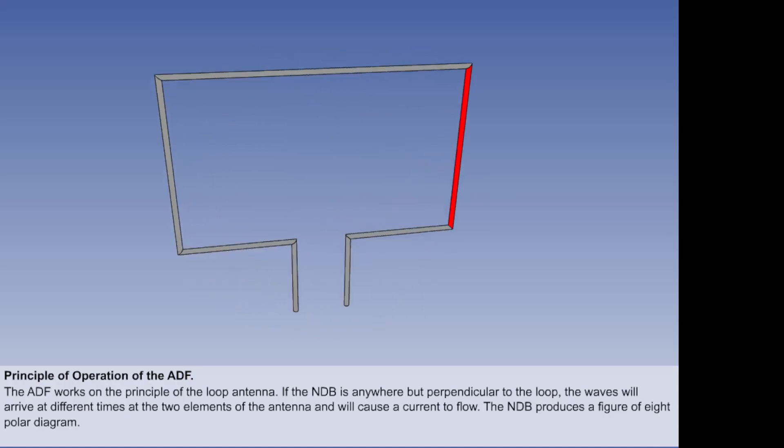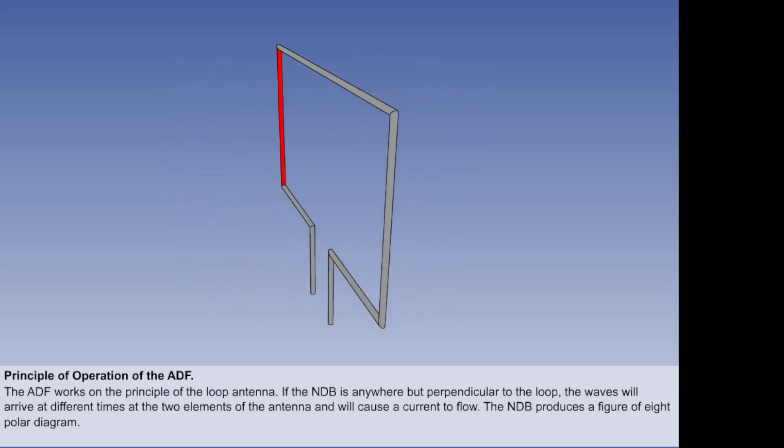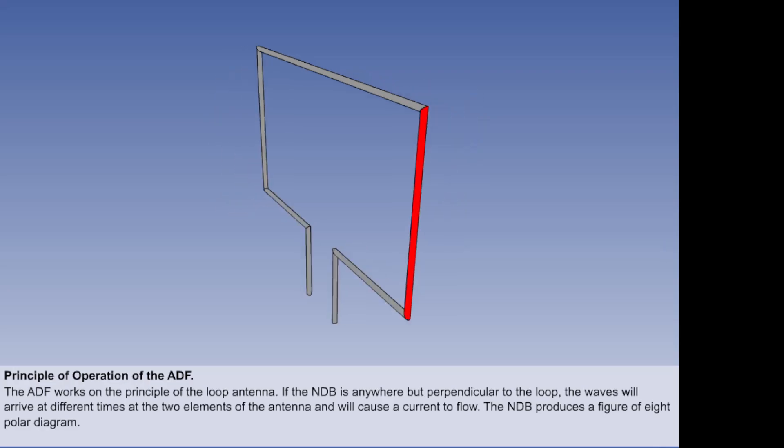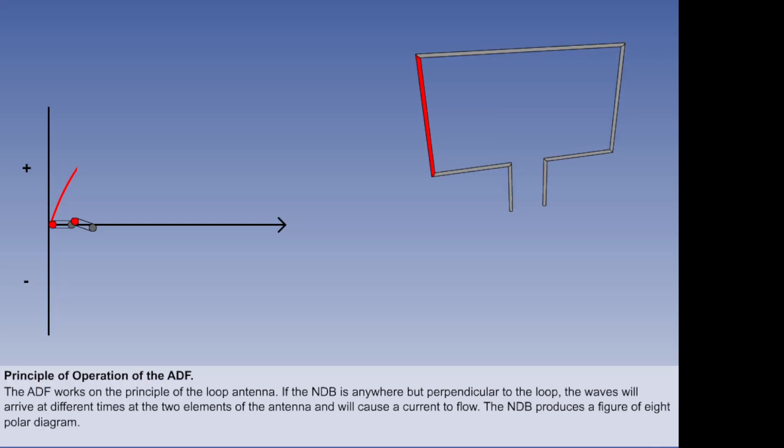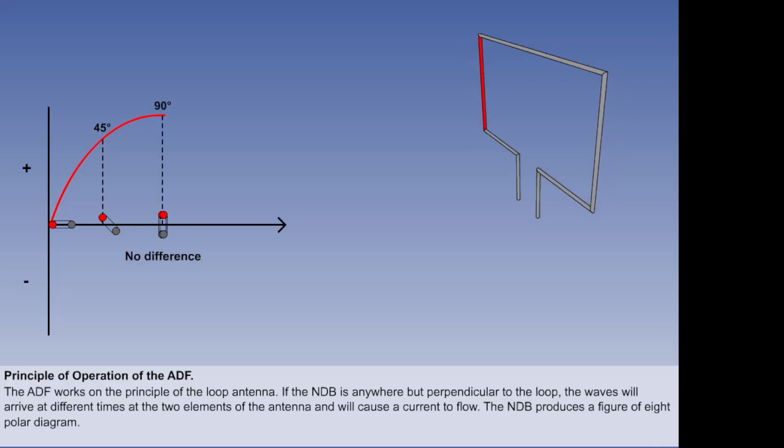In one complete revolution of the loop antenna, each vertical element will turn through 360 degrees.